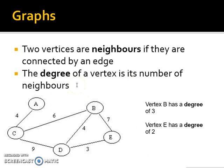And we've got something called the degree. The degree of a vertex is the number of neighbors that one of the vertices has. So vertex B has a degree of three, and vertex E has a degree of two.